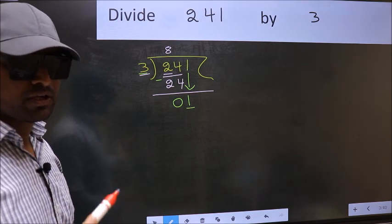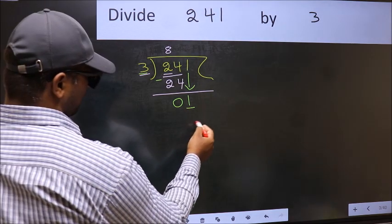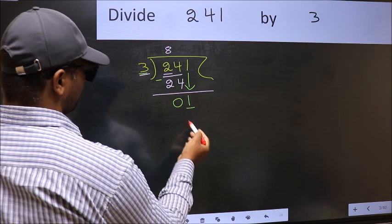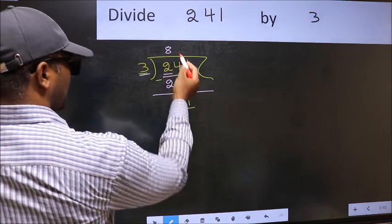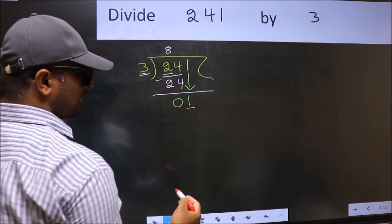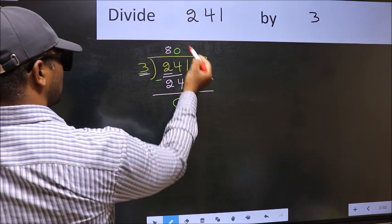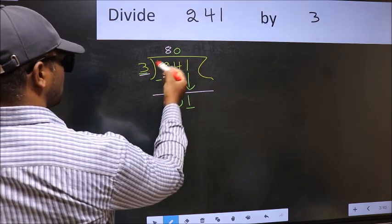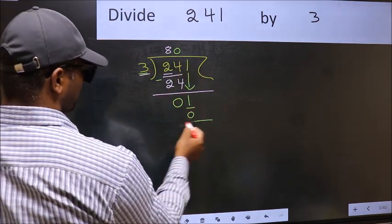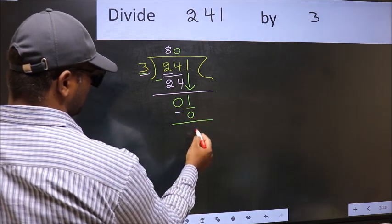Instead, what you should think of is, what number should we write here? If I take 1, I will get 3 here. But 3 is larger than 1. So, what we should do is, we should put 0. So, 3 into 0, 0. Now, you subtract 1 minus 0, 1.